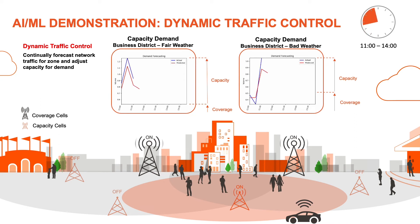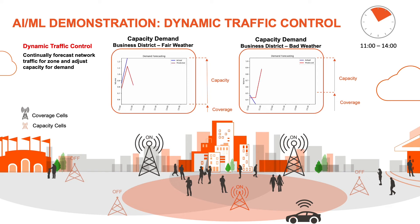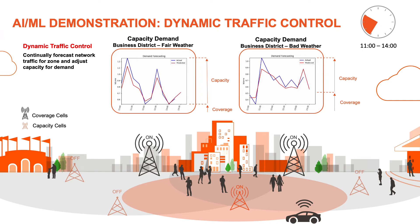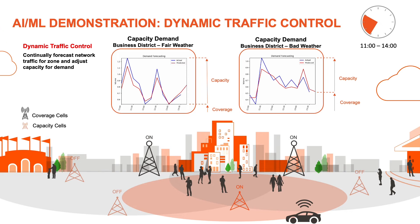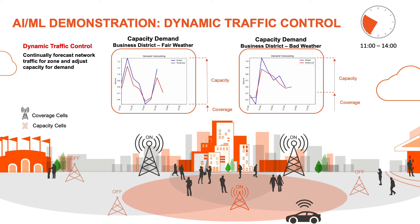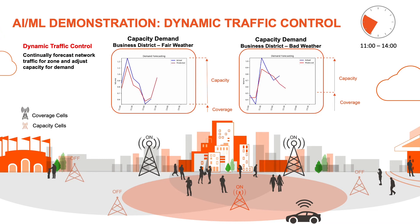Now we see the same scenario in the middle of the day, between 11 a.m. and 2 p.m. We see people moving around the business district near shops and restaurants, with less vehicle traffic and only a little activity near the transport hub. Again, the red line on the graph shows predicted capacity needs versus the blue line showing the actual capacity needed in the business district. We see an accurate ML forecasting model in action, enabling better operational efficiency and a reduction in cost for the operator in turning on capacity cells.